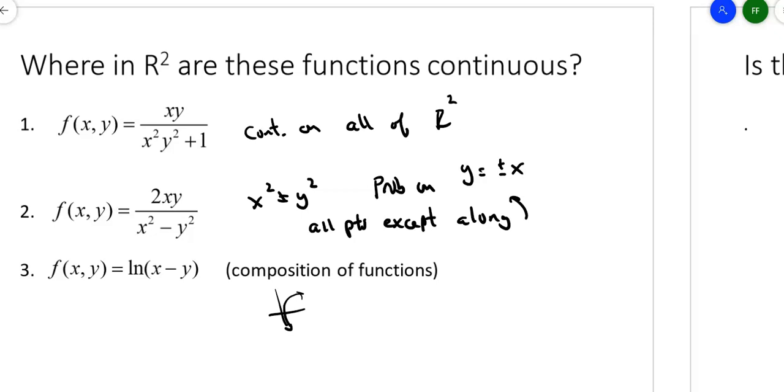So what's inside here has to be strictly greater than zero. I need (x minus y) to be greater than zero. Another way of saying that is I need all x, y's such that x is greater than y. In that case, I can't have anything that's less than or equal to y. I have to have x's that are strictly greater than y.